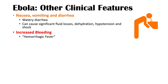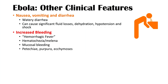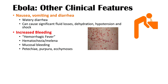Due to increased bleeding risk, hematochezia — bright red blood in the stool — and melena — black tarry stool from digested blood — can occur. Mucosal bleeding from the eyes and gums, as well as skin manifestations including petechiae, purpura, and ecchymosis, may also be seen.